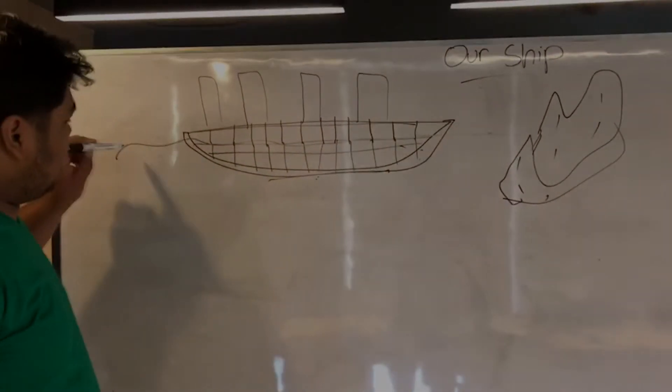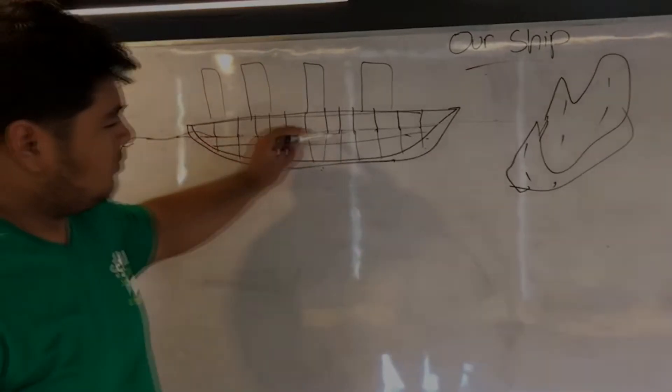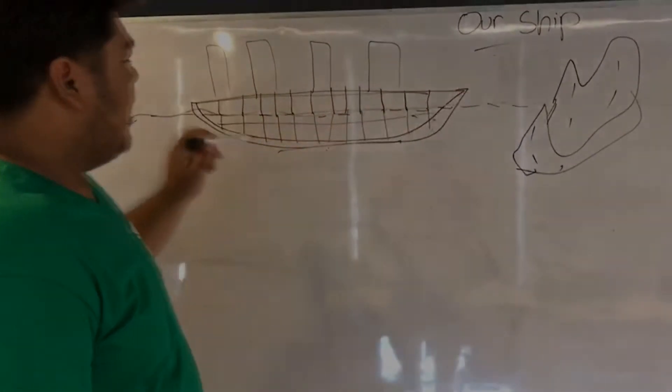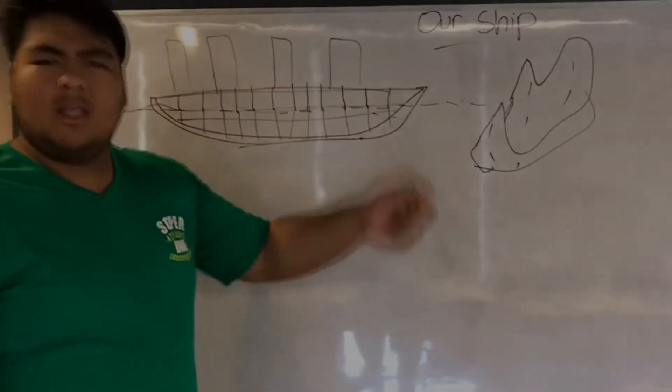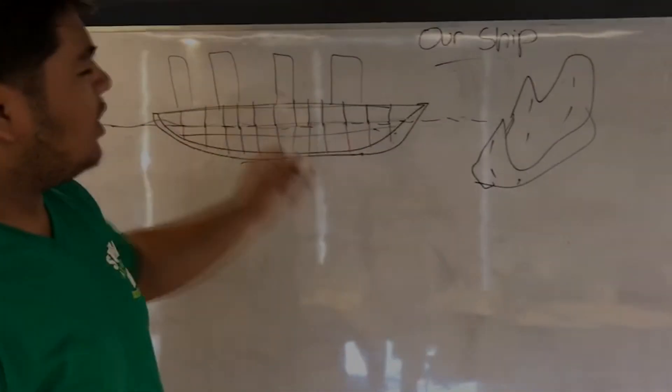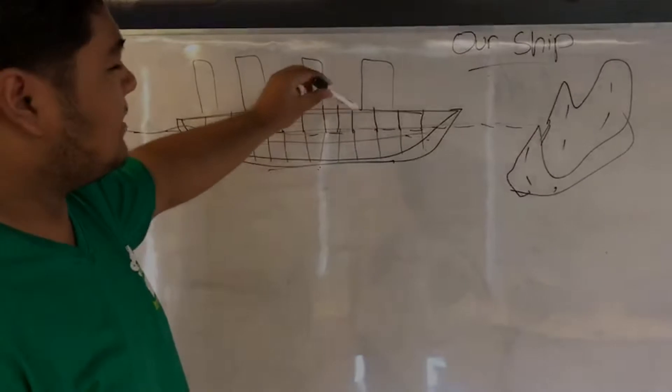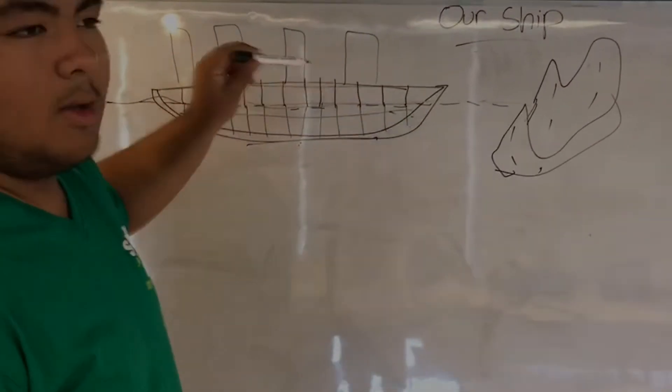So, now you can see here is the water line around this part. Now, the problem with Titanic is that the walls, like I think you heard it before. Now, the difference is our walls that separate each bulkhead is much higher.